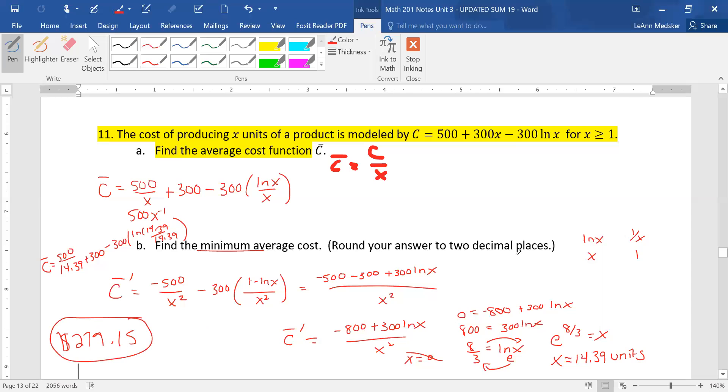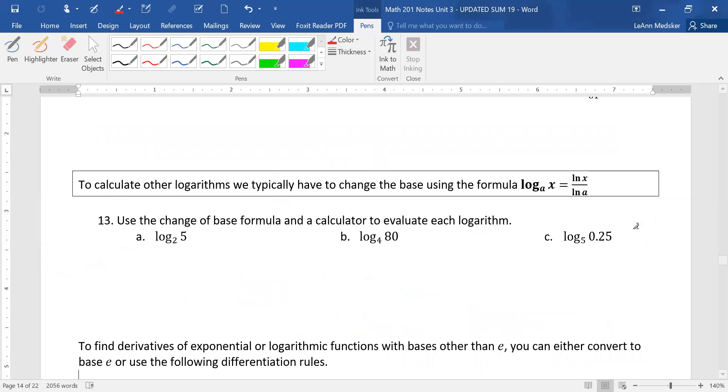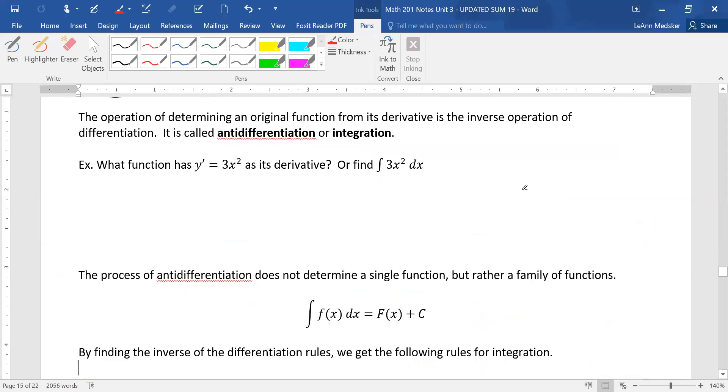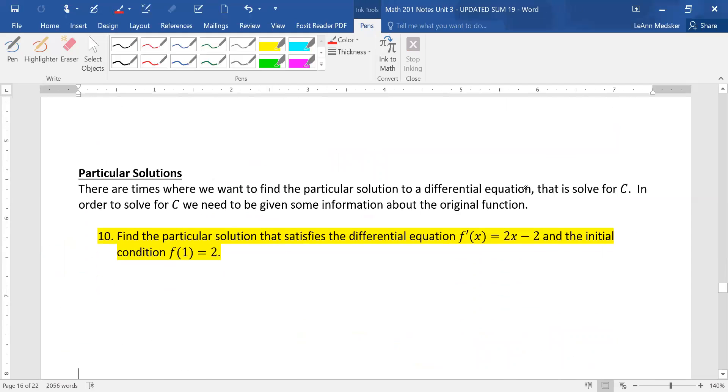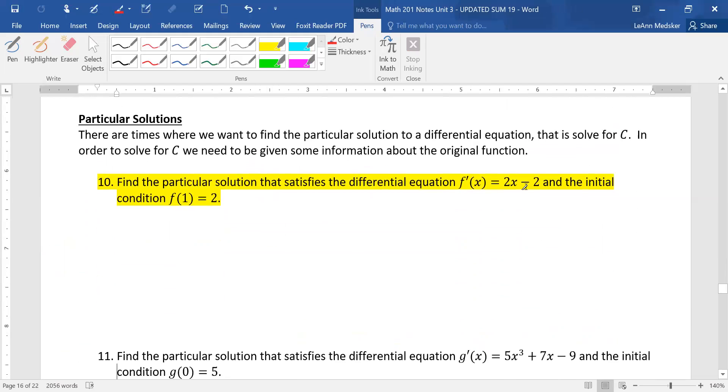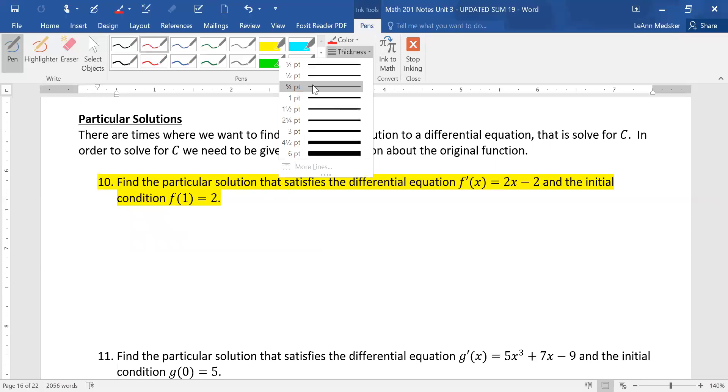Okay, moving on. In section 5.1, I believe that we skipped over number 10. So we're supposed to be finding the particular solution. So that means we're going to be doing an anti-derivative, which gives us a family of functions that are going to have our derivative.